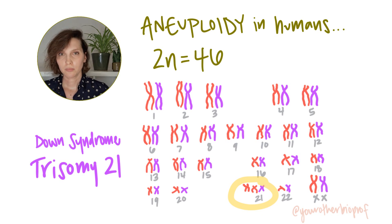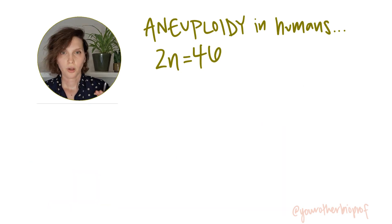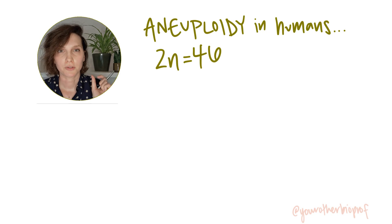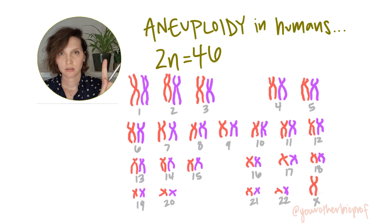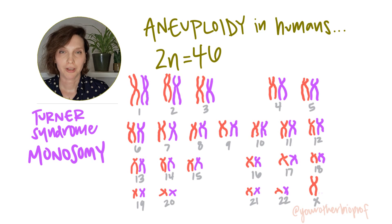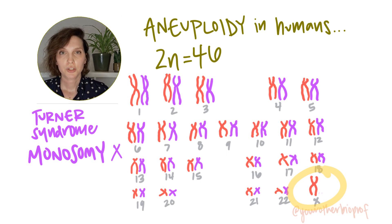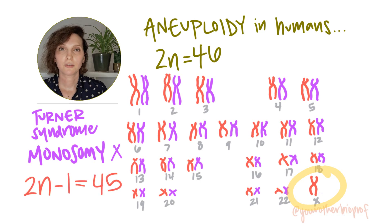So in individuals with Down syndrome, you can describe their chromosome counts as 2N plus one equals 47. So what if a chromosome is missing? Instead of a pair of chromosomes of that particular type, we've just got one. Our prefix is going to be mono — this is a monosomy. The only non-lethal monosomy in humans is Turner syndrome, which is monosomy of the X chromosome: one X chromosome, no other sex chromosome is present. In individuals with Turner syndrome, 2N minus one equals 45.